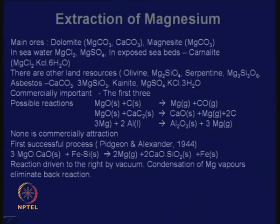Why am I writing ferrosilicon? Because in the market it is much easier to procure ferrosilicon, since ferrosilicon is produced as a ferro alloy and producing pure silicon is a lot more problematic, nor is it required. That is why, although silicon is the reducing agent, we are adding ferrosilicon. This also has an advantage — the iron part will play a role, which I will come to. The reaction produces magnesium vapour, calcium combines with silica, silicon is the reducing agent, and iron is left free as a solid, because the reaction occurs at around 1000°C.